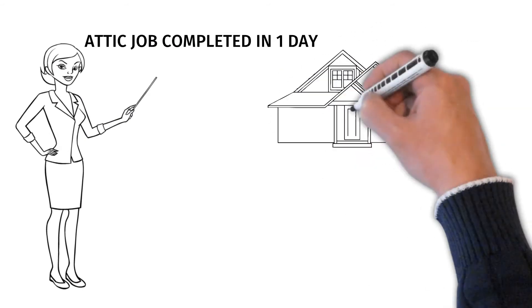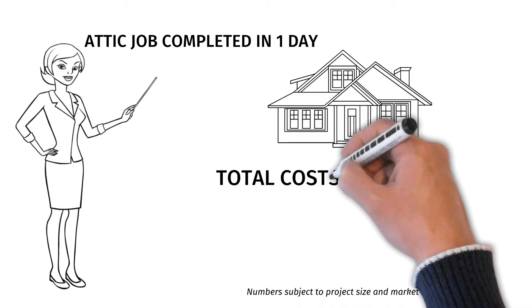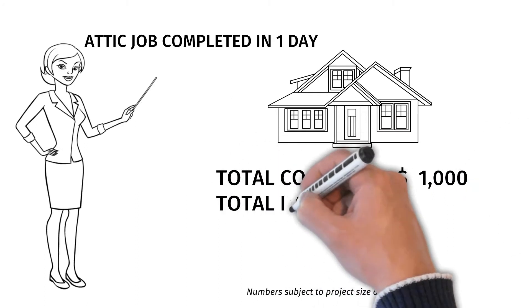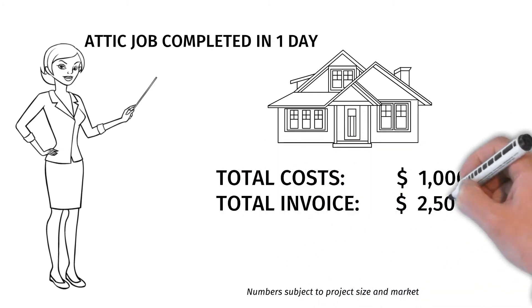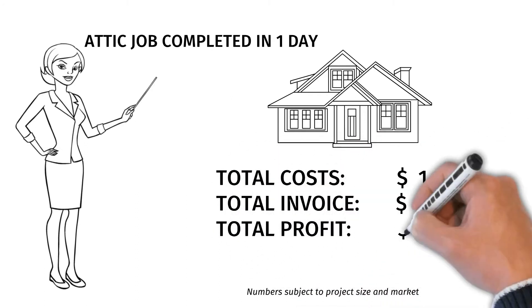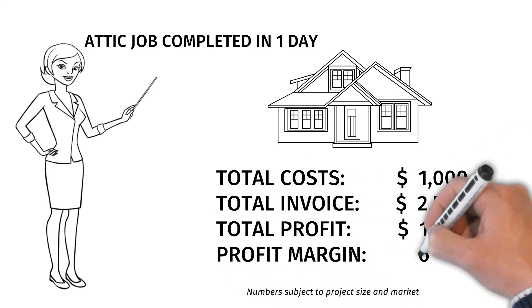Now, let's break down the numbers. Total costs, $1,000. Total invoice, $2,500. Total profit, $1,500. That's a profit margin of 60%.